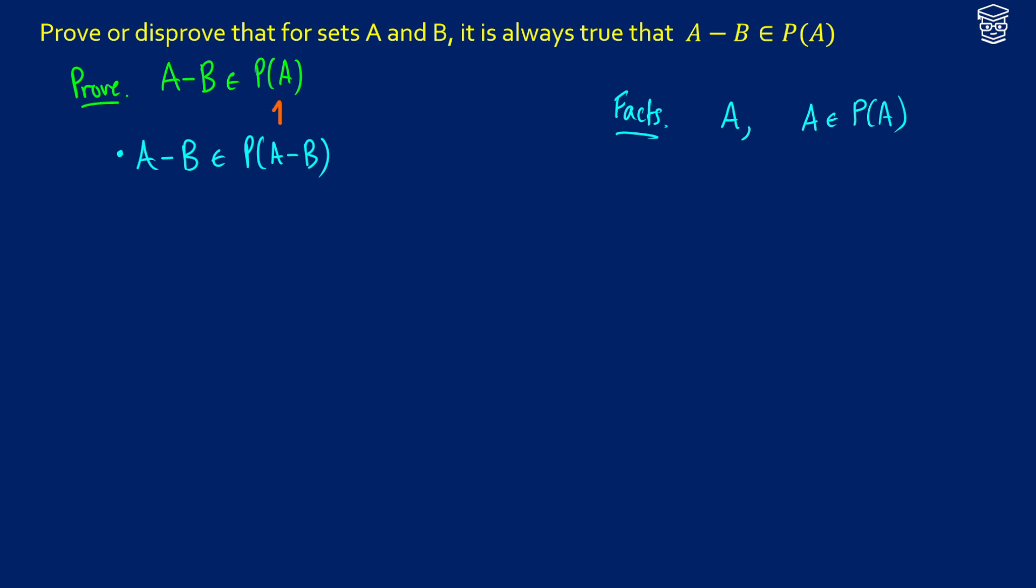So what we're going to show at this point is we're going to show that the power set of A minus B is a subset of the power set of A. Because if the power set of A minus B is a subset of the power set of A, then anything that applies to the power set of A minus B will also apply to the power set of A, and we're going to get what we want.